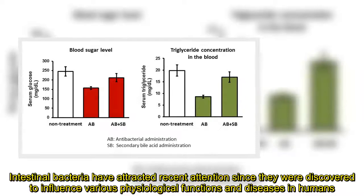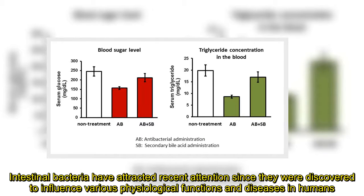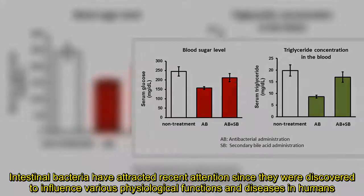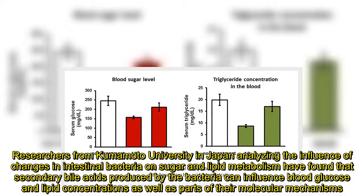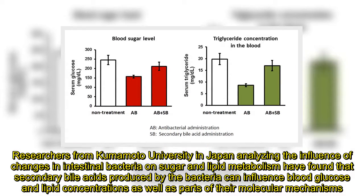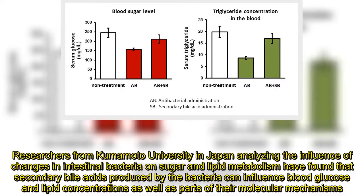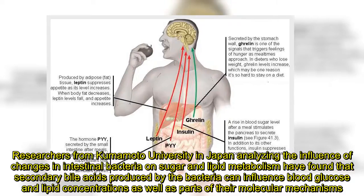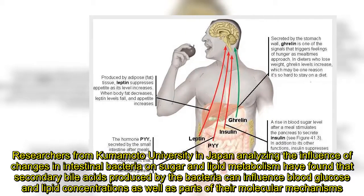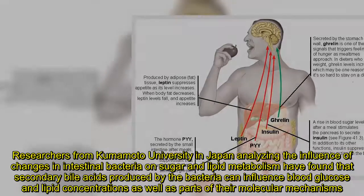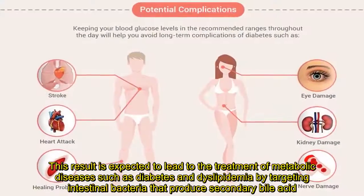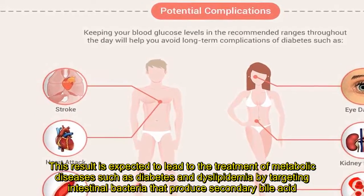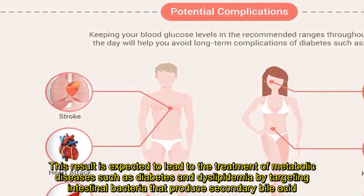Intestinal bacteria have attracted recent attention since they were discovered to influence various physiological functions and diseases in humans. Researchers from Kumamoto University in Japan, analyzing the influence of changes in intestinal bacteria on sugar and lipid metabolism, found that secondary bile acids produced by the bacteria can influence blood glucose and lipid concentrations as well as parts of their molecular mechanisms. This result is expected to lead to the treatment of metabolic diseases such as diabetes and dyslipidemia by targeting intestinal bacteria that produce secondary bile acid.